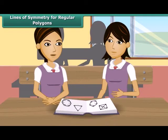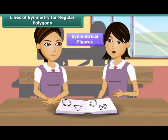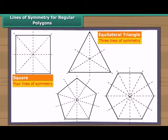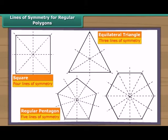Therefore, a square, an equilateral triangle, a regular pentagon, and a regular hexagon are examples of regular polygons. All their sides are equal and the measures of their angles are also equal. The regular polygons are symmetrical figures and have many lines of symmetry. An equilateral triangle has three lines of symmetry, a square has four, a regular pentagon has five, and a regular hexagon has six lines of symmetry.